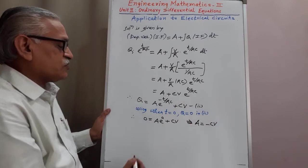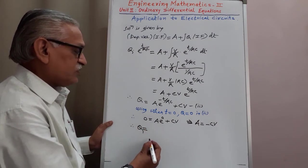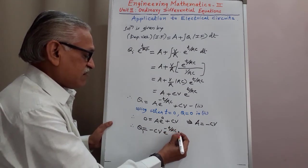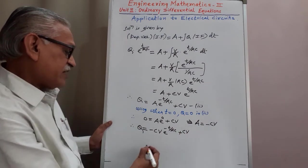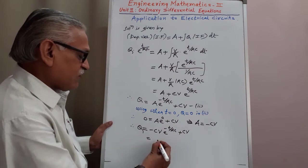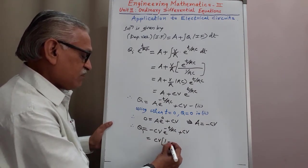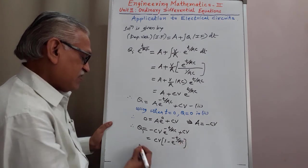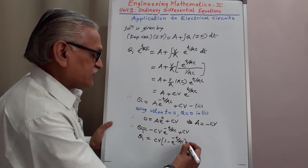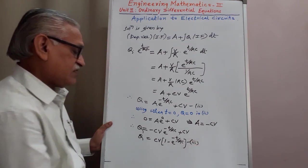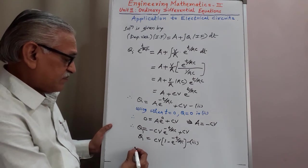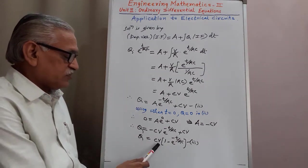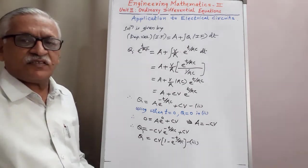Substituting A equals minus CV into Equation 2, we get: Q equals minus CV times e raised to minus T/RC plus CV. Taking CV common from both terms, we get Q equals CV times (1 minus e raised to minus T/RC), which is the required expression for charge Q.